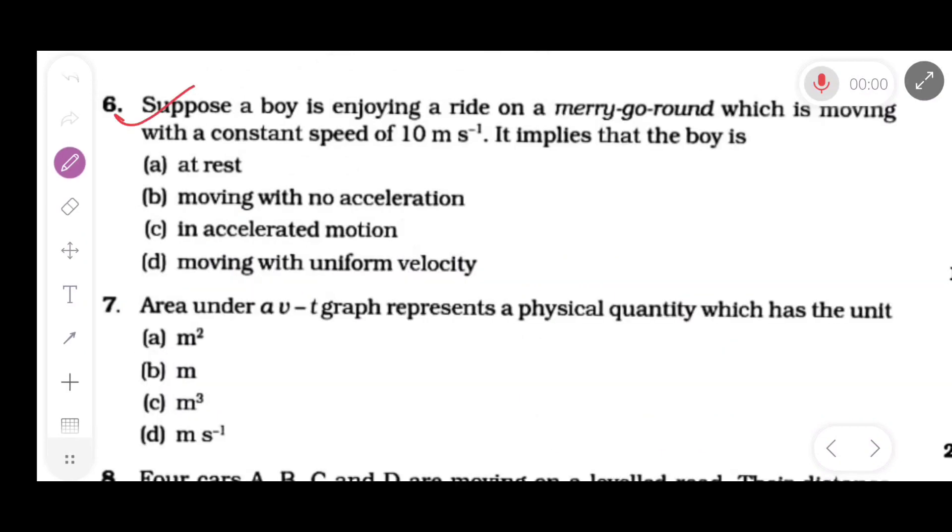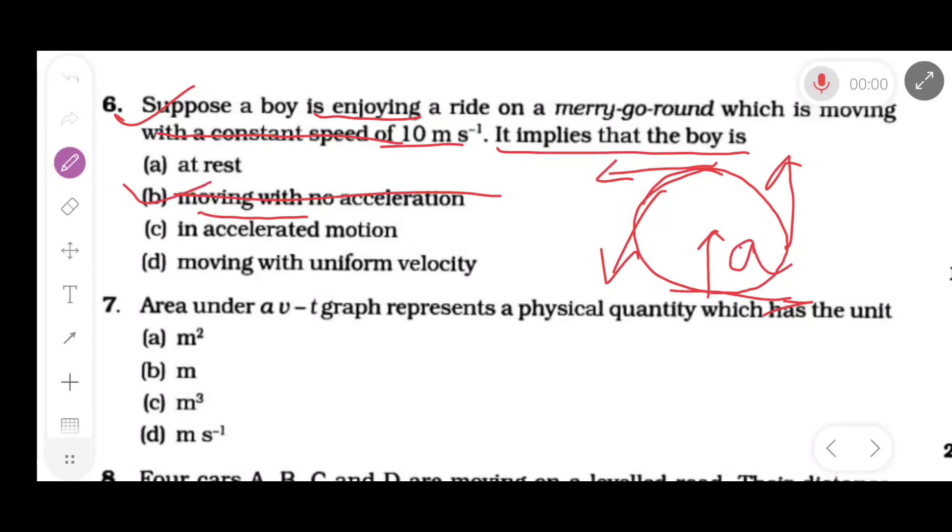Now question 6. Suppose a boy is enjoying a ride on a merry-go-round which is moving with a constant speed of 10 meter per second. It implies that the boy is. In merry-go-round it is a circular motion. Here speed is constant, that is 10 meter per second. So direction of velocity is always directed tangentially. Therefore velocity changes. As velocity changes, so there will be an acceleration, and this acceleration is known as centripetal acceleration. So option C is correct: in accelerated motion.